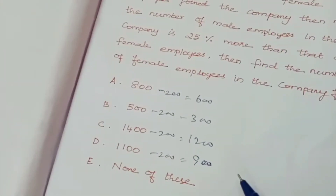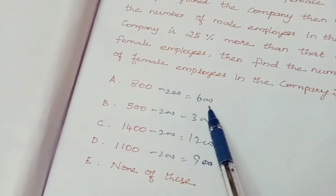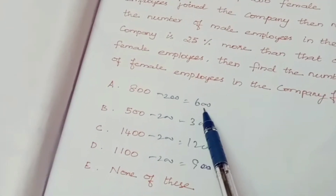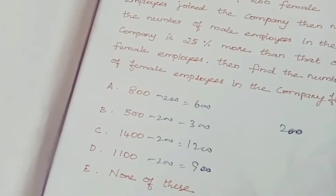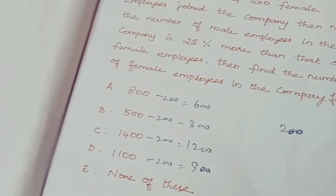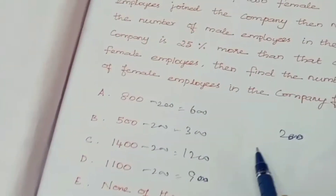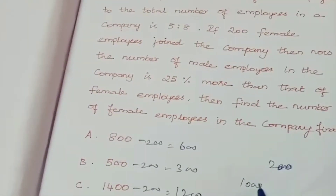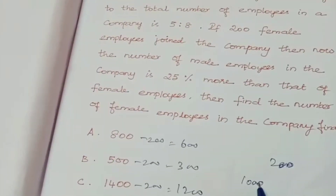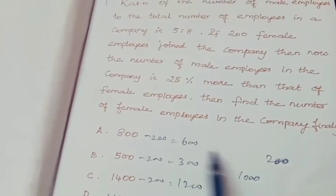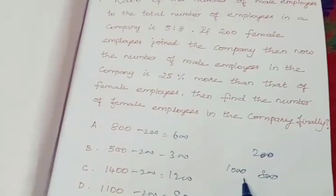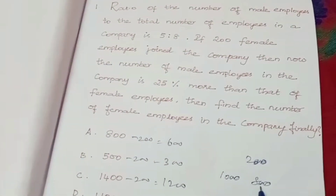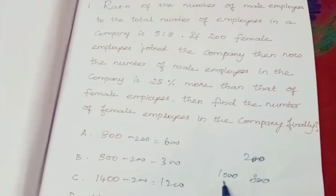The first option is 600 — that is 3 shares, so 1 share equals 200. Male members at 5 shares equals 1000. Female members: 600 plus 200 equals 800. Checking 25%: 25% of 1000 is 250, and 800 plus 200 equals 1000. So option A, 800, is correct.